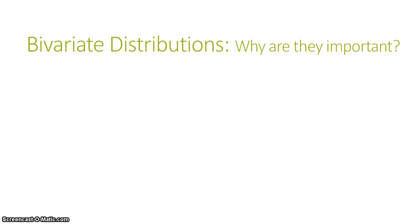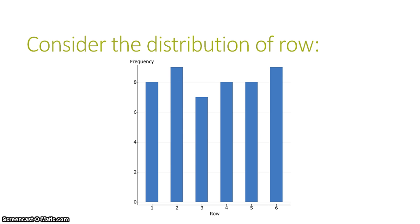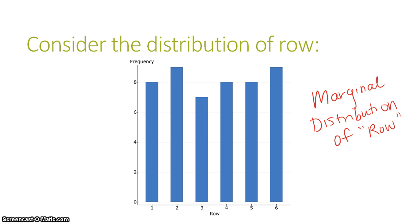Let's motivate the idea of using bivariate distributions and why they're important with a little example. Last spring, in one of my classes, as students were taking an exam, I recorded which row they were sitting in. There were six rows in the classroom. After they took the test, I also recorded their test score, their grade. I can consider these variables independently of each other. If I look at the distribution of row for the entire class, I can see that the students were pretty uniformly distributed among the six rows. Because I'm looking at row without being interested in grade as well, this is called a marginal distribution of row.